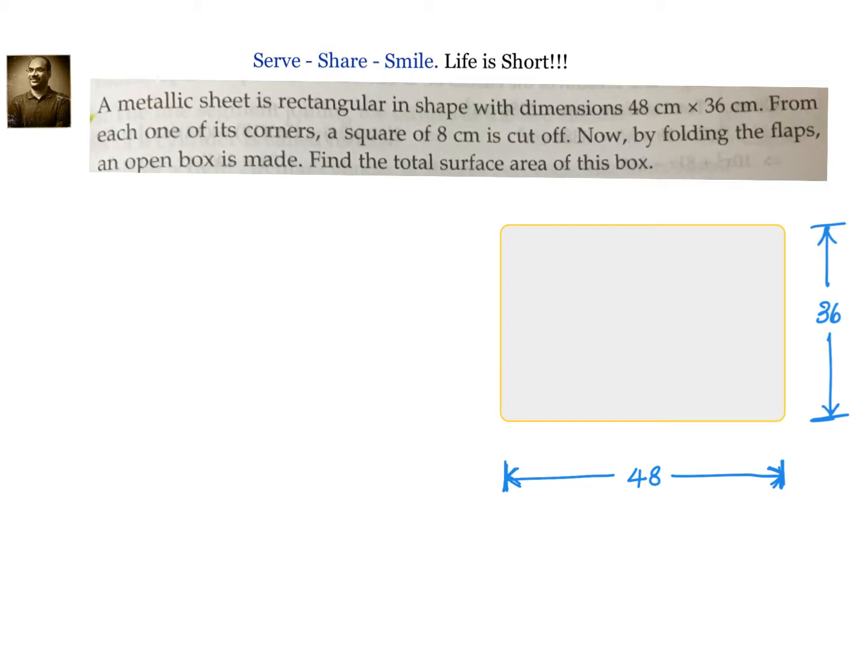Let us look at this problem related to 9th grade surface areas and volumes. A metallic sheet is rectangular in shape with dimensions 48 by 36 centimeters. From each one of its corners a square of 8 by 8 is cut off. Now, by folding the flaps an open box is made. Find the total surface area of this box.